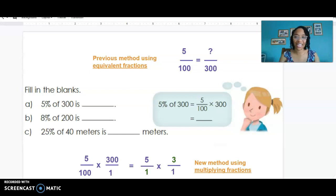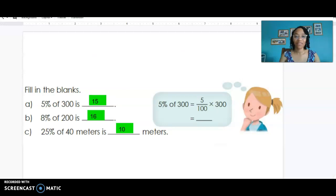5% of 300 is 15, 8% of 200 is 16, 25% of 40 is 10.